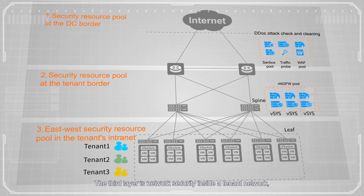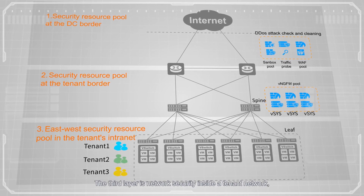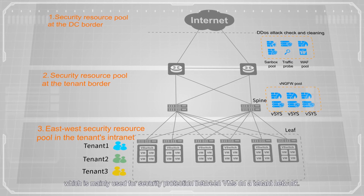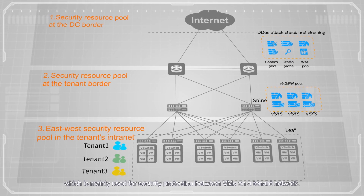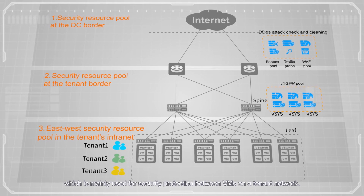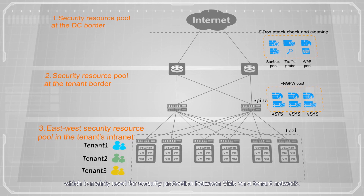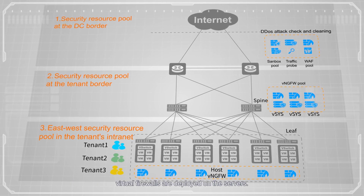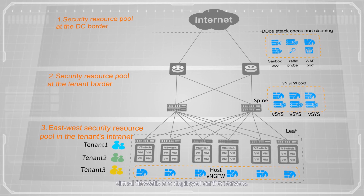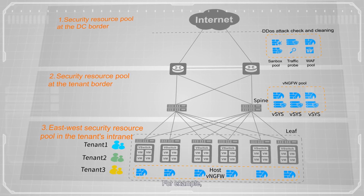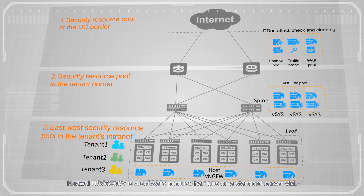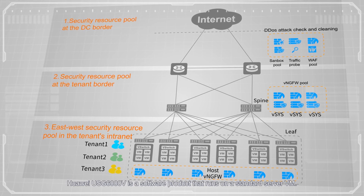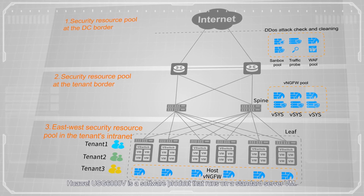The third layer is network security inside a tenant network, which is mainly used for security protection between VMs on a tenant network. Generally, virtual firewalls are deployed on the servers. For example, Huawei USG 6000v is a software product that runs on a standard server VM.